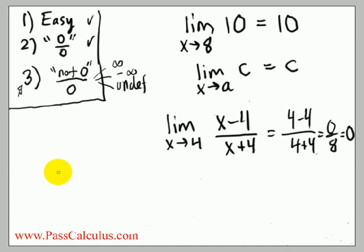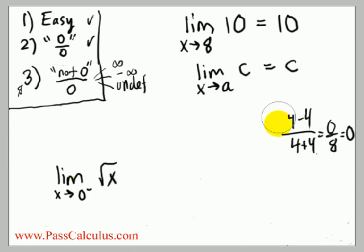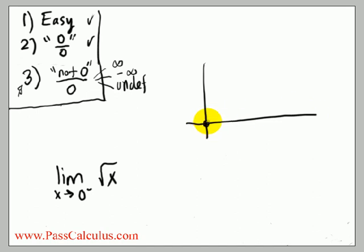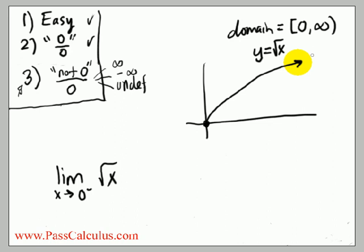Another example that can get tricky: the limit as x goes to 0 from the left of the square root of x. Remember, you can only take the square root of a number that is greater than or equal to 0. The graph of root x starts at (0, 0) and grows slowly, with domain only for x greater than or equal to 0. But approaching from the left means x is a small negative number, and you can't take the square root of a negative. So this limit is not defined.